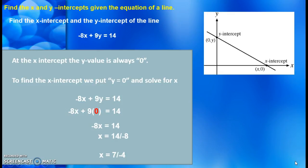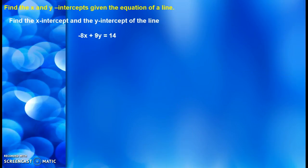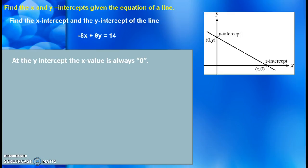Now we found the x-intercept. Let's find the y-intercept. Well, at the y-intercept, x is always equal to zero. So we put x equal to zero and solve for y. -8 times zero is zero, so you're left with 9y = 14. And y = 14/9.